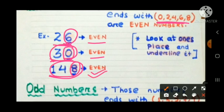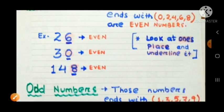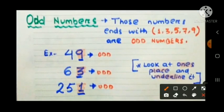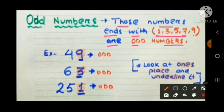One rule to follow: look at the ones place and underline the digit so it is easy to identify even numbers. Now let's look at odd numbers. Those numbers that end with 1, 3, 5, 7, or 9 are odd numbers. If any of these digits appear in the ones place, that number is an odd number.